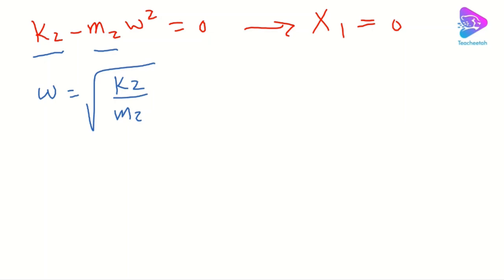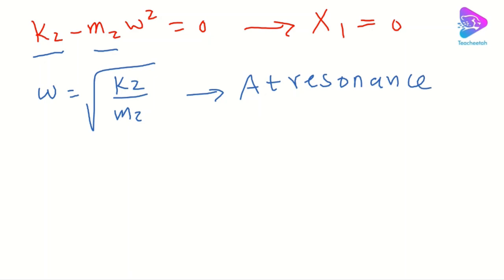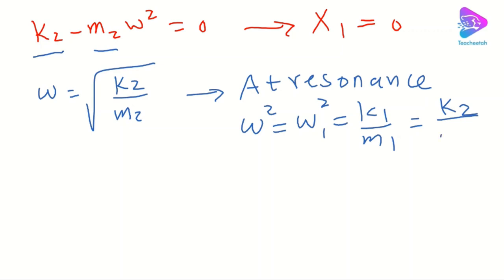It seems that to satisfy this condition, the frequency of excitation ω should equal the natural frequency of the vibration absorber ω₂ = √(k2/m2). Recalling that at resonance for the original system ω = ω₁ = √(k1/m1), we similarly have for the absorber ω₂ = √(k2/m2). Now let's simplify the expressions for X1 and X2 for any ω — not necessarily at resonance — using ω₁, ω₂, and δ_static.